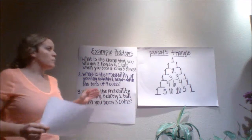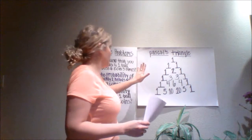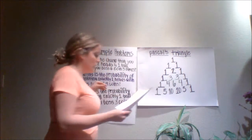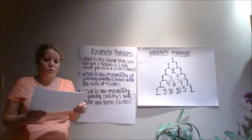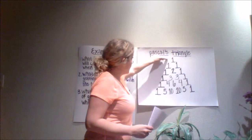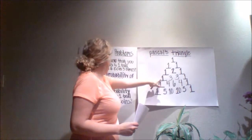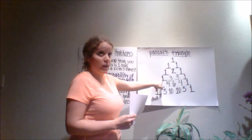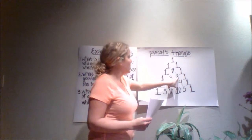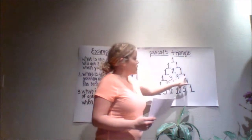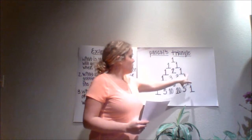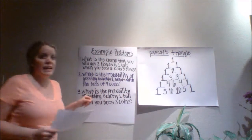Our third step is to use Pascal's triangle — I love this strategy. We're going to read our first question again so we can answer it with Pascal's triangle. What is the chance that you will get two heads and one tail when you toss a coin three times? We go down three rows — remember this first row is row 0, so 0, 1, 2, 3. Then you go over two positions, starting at 0, so 0, 1, 2. That number 3 is going to be our numerator. Then we add all numbers in that row: 1 plus 3 is 4, plus 3 is 7, plus 1 is 8 — that's our denominator. So the answer is three eighths.